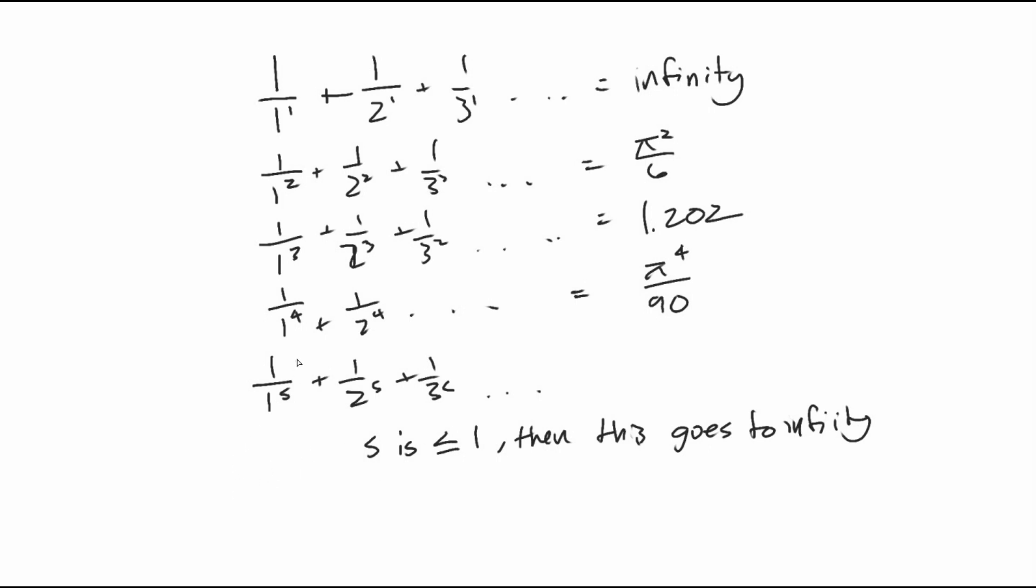Then this comes around. It turns out this function is actually equal to 1 over 1 minus 2 to the s times 1 over 1 minus 3 to the s.